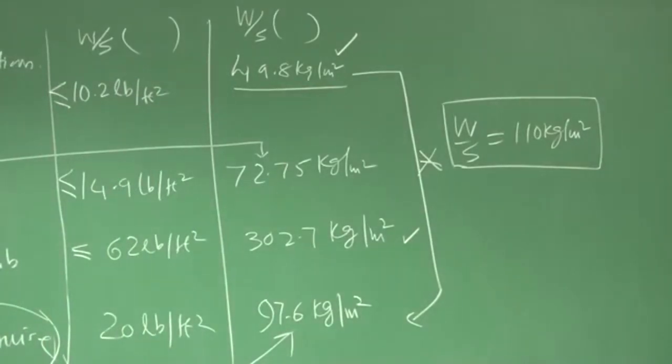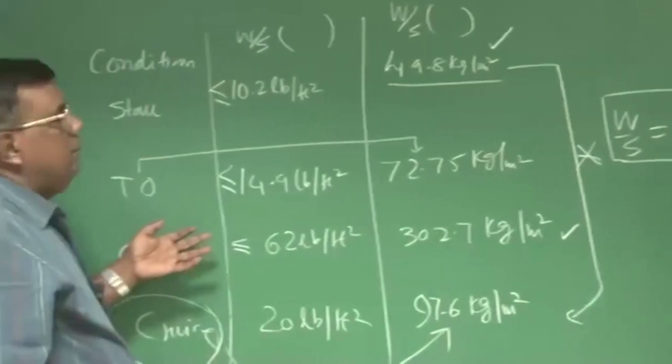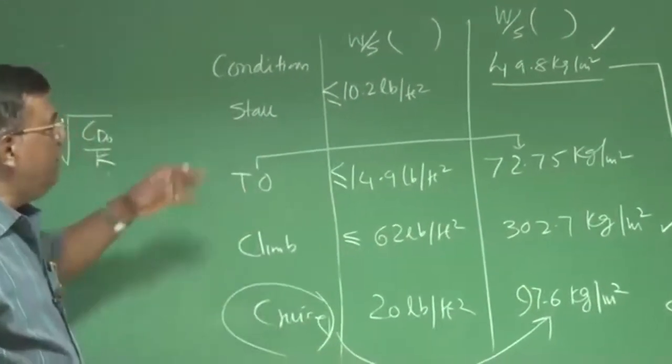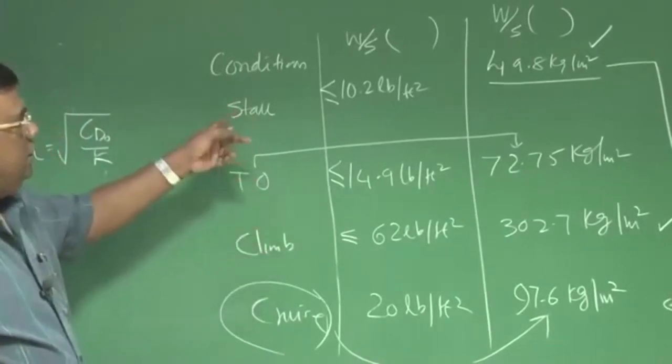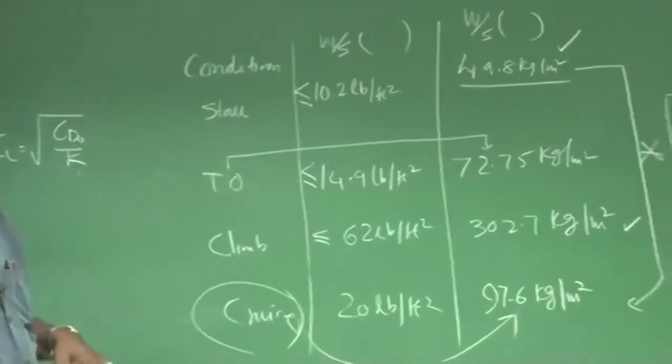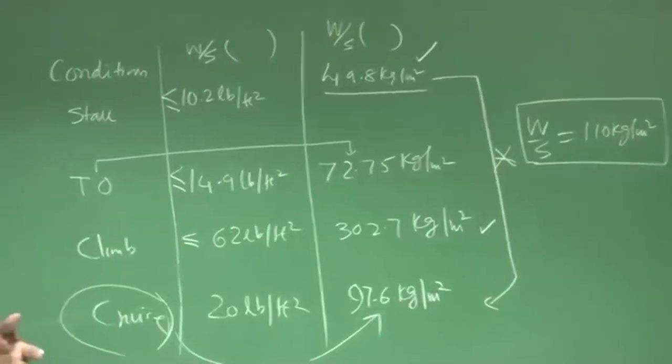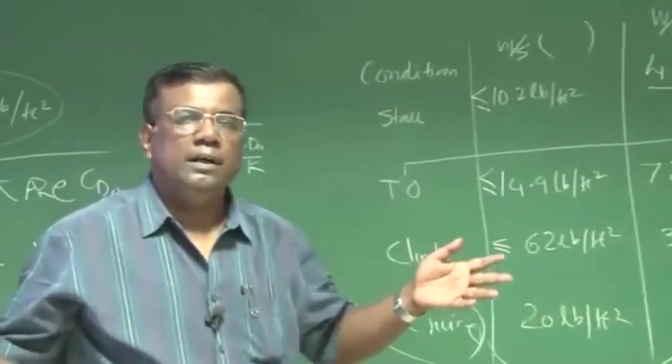Generally, if we read a book, the thumb rule advice is always you take the lowest wing loading. Lowest wing loading here is which one? Stall, 49.8 kg per meter square. Why it is recommended? Lowest wing loading means larger wing area.